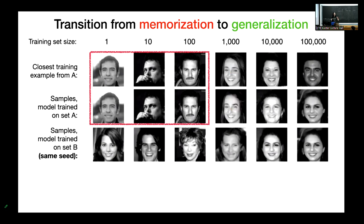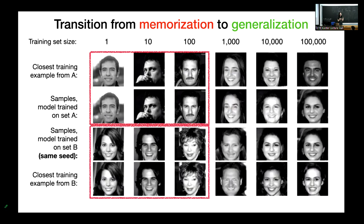We then take a new batch of images not overlapping with the previous batch and repeat the experiment — training six new models on this new data and sampling images. Again, samples are memorized for small training set sizes. But for the largest training set size (100K), starting from the same initial point, the new model generates the same example even though it was trained on a completely different dataset. This means the model variance is basically going to zero. Two models trained on two different datasets ended up learning the same denoisers and essentially the same densities.